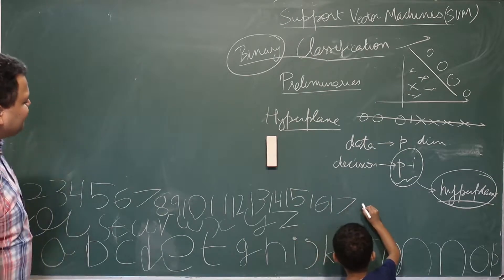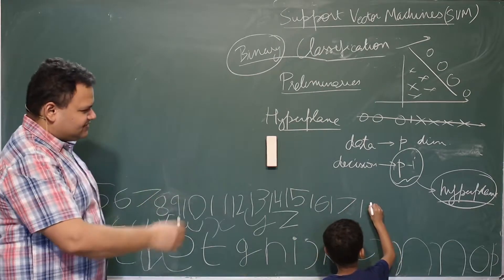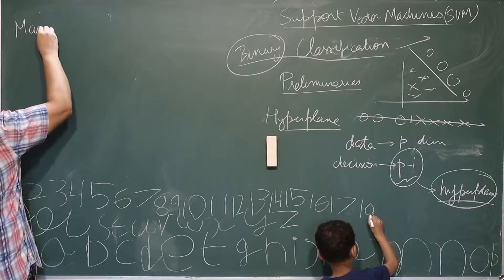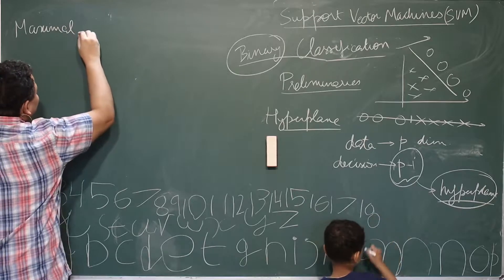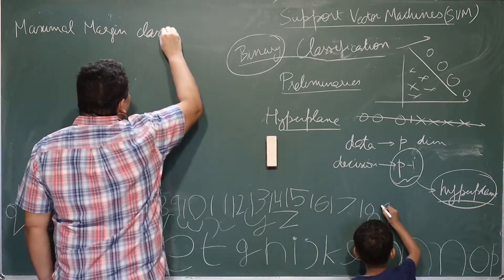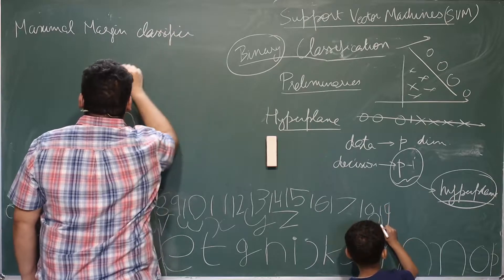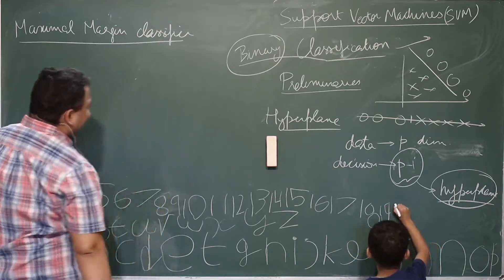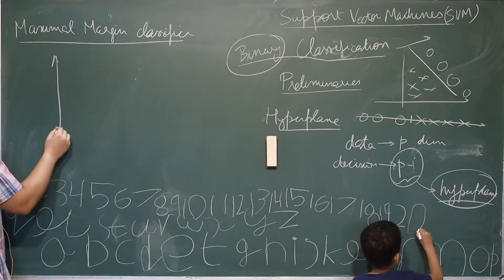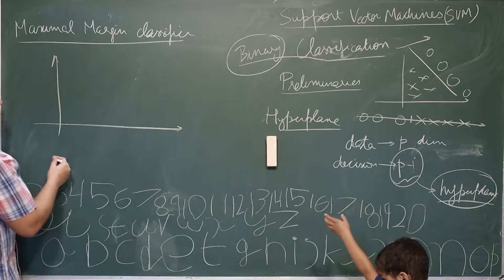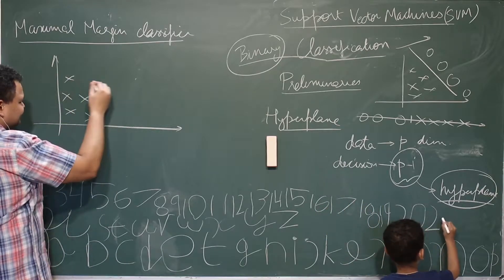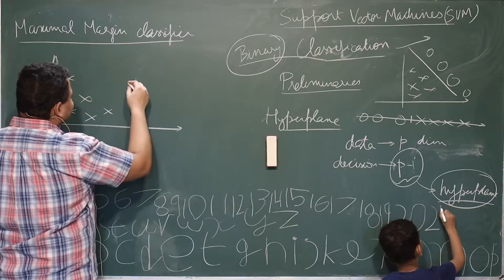Now let us look at the same data again and talk about the maximal margin classifier. Let us say my data looks something like this.